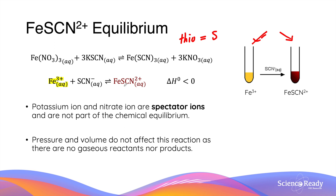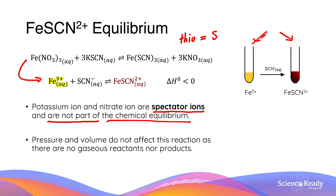The usual way to form this complex ion is by mixing a solution of iron nitrate with a solution of potassium thiocyanate. This forms the complex ion iron thiocyanate, as well as potassium nitrate. In this equation, potassium ions and nitrate ions are merely spectator ions — they do not participate and are not part of the chemical equilibrium. So usually what we write is the net ionic equation.